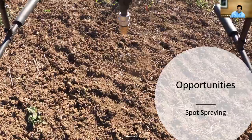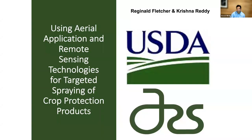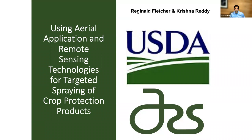Some examples in a rice field — more green-on-green applications, detecting individual weeds and targeting and spraying them. Reginald Fletcher and Krishna Ready in Mississippi are presenting some of their work. Early work with UAVs mapped various vegetation indices and how crop yields were impacted by dicamba spray. Here they're testing the effects of drift injury on soybeans at various rates, detecting this with RGB imaging, and showing strong relationships by mapping soybean injury using drone imagery and vegetation indices.